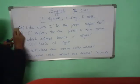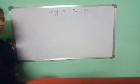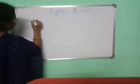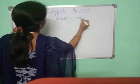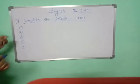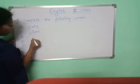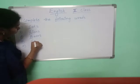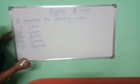So now we will do the next bit, children. Next is: complete the following words. First one is cats, lions, bears, croc, squawk.